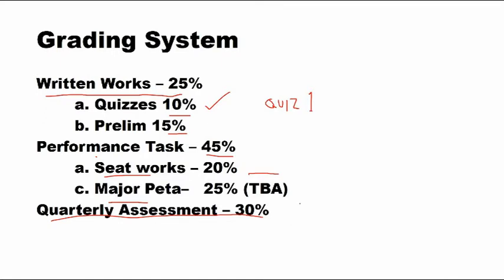If you score 20% and below on the quarterly assessment, make sure you perfect your written works and performance task. Even then, if your quarterly assessment score is very low — like 1 or 2 points — don't expect to pass, because 70% of the other components would need to be perfect just to make up for that 30%. And even that won't be enough since the passing grade is 75%. So if you score 1, 2, 3, 4, or 5 on the quarterly assessment, you need to perfect written works and performance task.